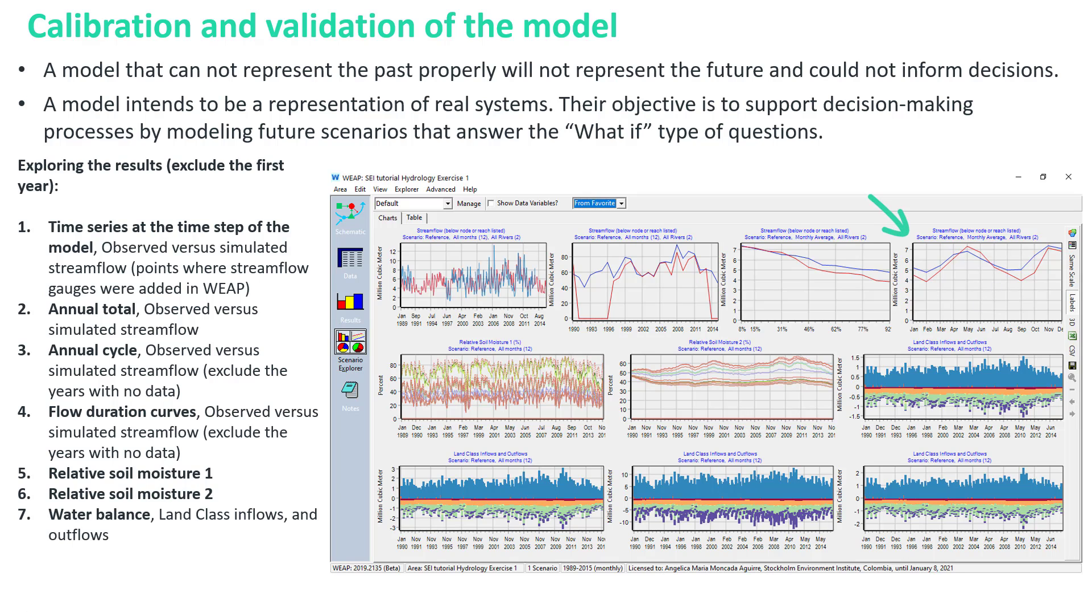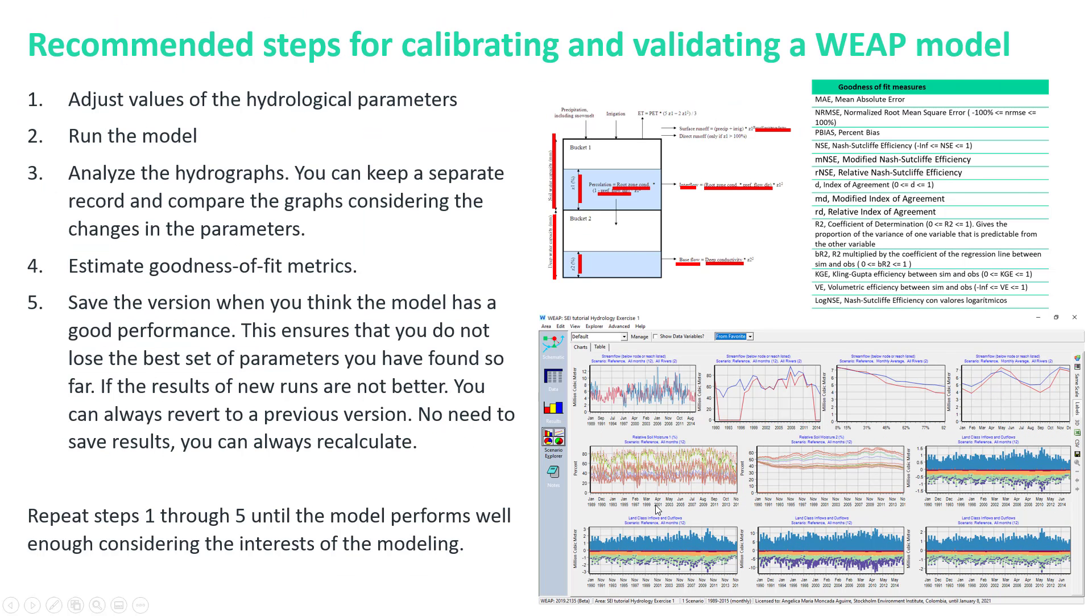When setting up this graph, you should exclude years with a considerable amount of missing data. Flow duration curves. Relative soil moisture 1 and 2. These graphs should show a stable behavior over time from a seasonal point of view, except for extreme conditions. Water balance and land class inflows and outflows.